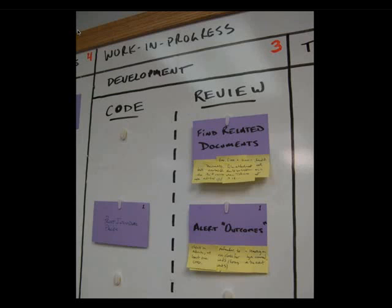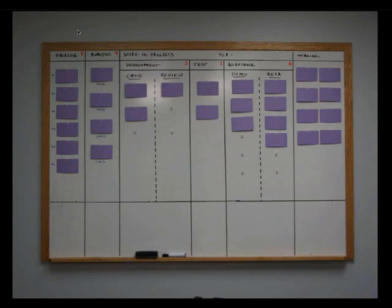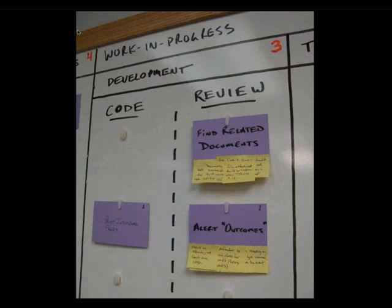Cycle time — let me go back to the Kanban board. You see this work-in-progress bar at the top that goes across several states: development, test, and acceptance. At my previous job, we measured cycle time as everything in work in progress — the time it goes into development to the date it comes out of acceptance. Lead time is the whole enchilada — from backlog, from concept to cash. Cycle time is a useful measure to understand: we've had this feature in progress for 10 days, and our average cycle time is 6 days — what are we doing wrong?